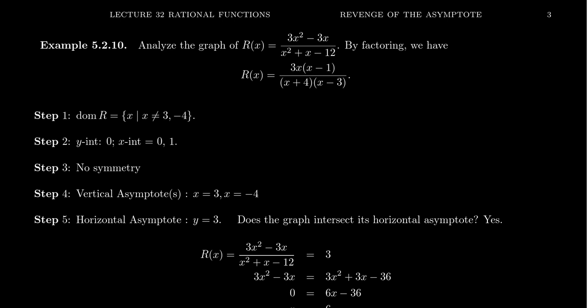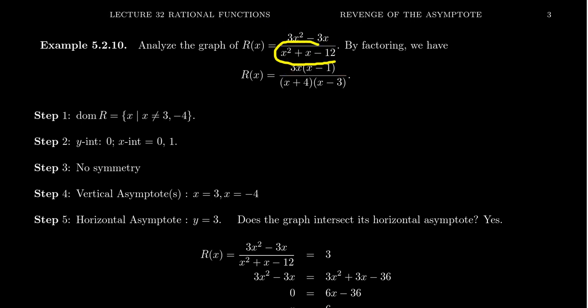The first thing I want to do is factor the numerator and denominator. For the numerator, 3x² - 3x, there's a greatest common divisor of 3x. Factoring that out leaves x - 1, giving 3x(x - 1). For the denominator, the quadratic trinomial x² + x - 12 has leading coefficient 1, so I look for factors of -12 that add to 1: that's 4 and -3, giving (x + 4)(x - 3).